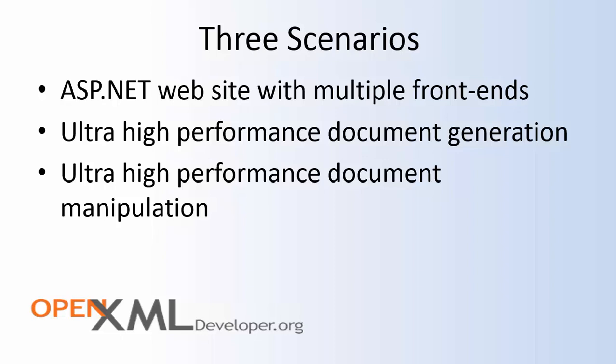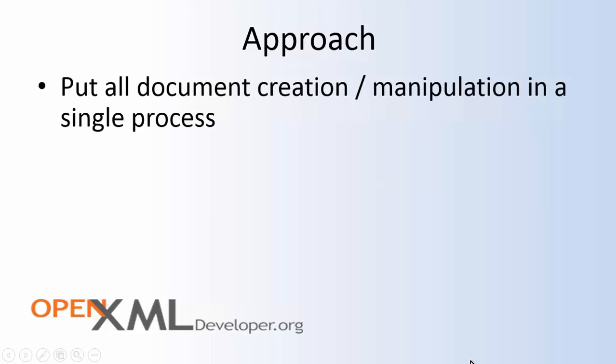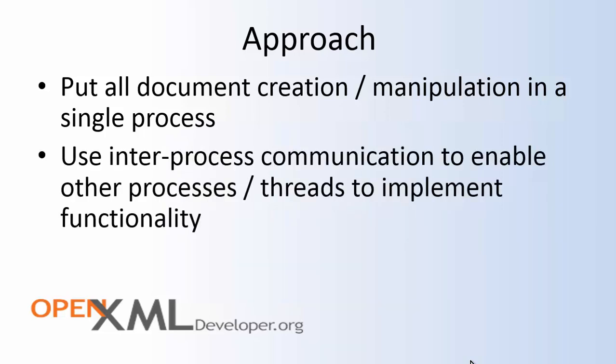Today we're going to talk about how to mitigate the first scenario — an ASP.NET website with multiple frontends — and eliminate this type of bug once and for all. The approach we're going to take is to put all document creation and manipulation in a single process, then use inter-process communication to enable other processes or threads to implement their desired functionality. The code I'm going to demonstrate today uses MSMQ, an inter-process communication facility in Windows that enables you to, in a very lightweight way, send messages back and forth between processes or even between machines.